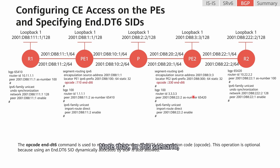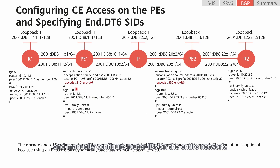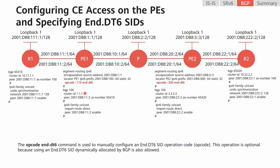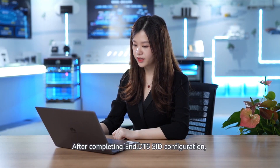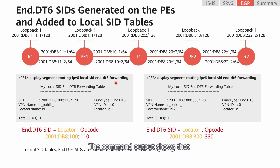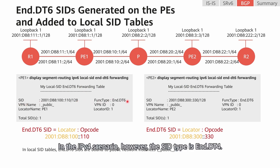Note that in this scenario, you are advised to uniformly plan and manually configure router IDs on the entire network. Otherwise, if devices automatically generate identical router IDs, a conflict occurs, preventing BGP peer relationships from being established. After completing end.dt6 SID configuration, check the local SID tables on P1 and P2. The command output shows that the SID type is end.dt6 in this scenario. In the IPv4 scenario, however, the SID type is end.dt4.